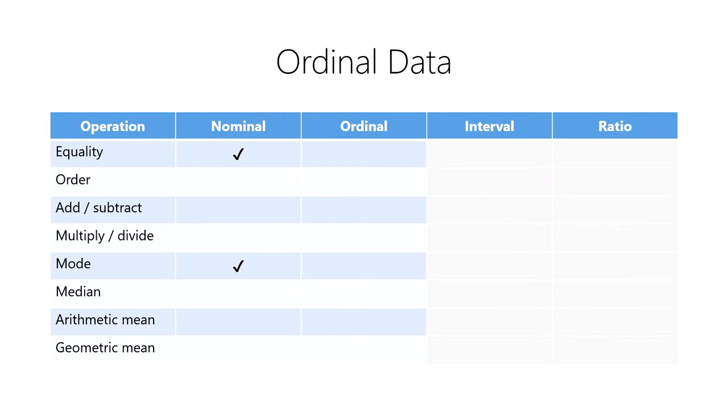We can perform a few more mathematical operations on ordinal data than on nominal data. In addition to testing for equality and determining the mode, we can also test two ordinal values for their order by determining if one value is ranked greater or less than another.